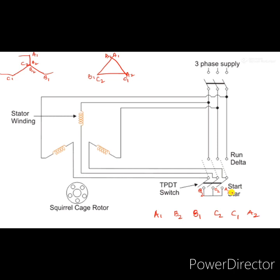In a star-delta starter, there is a TPDT switch — a triple pole double throw switch — operated with a handle that changes the starter from star connection to delta connection. This occurs once around 75 to 80% of the rated speed is reached. The rated speed is typically 1450 RPM or 1500 RPM. Once it reaches 75 to 80% of that value, we use the handle to change the position from star to delta connection, after which the running condition continues until we switch off the supply.